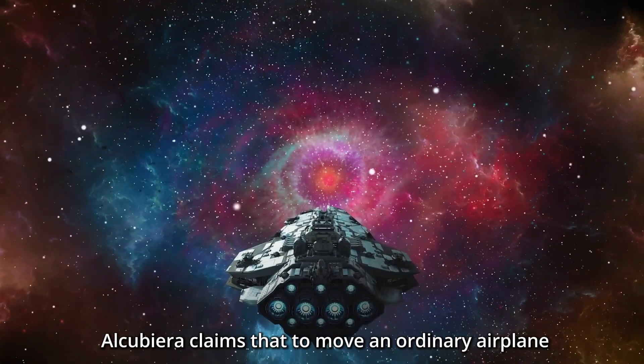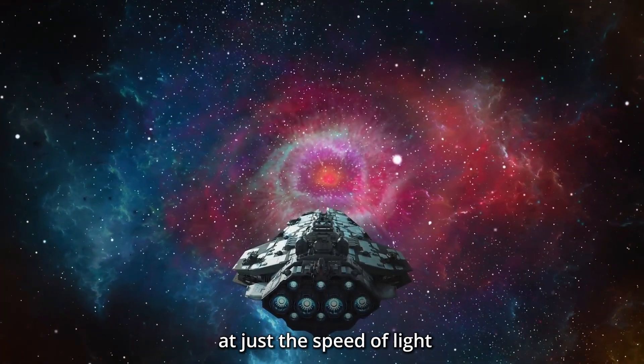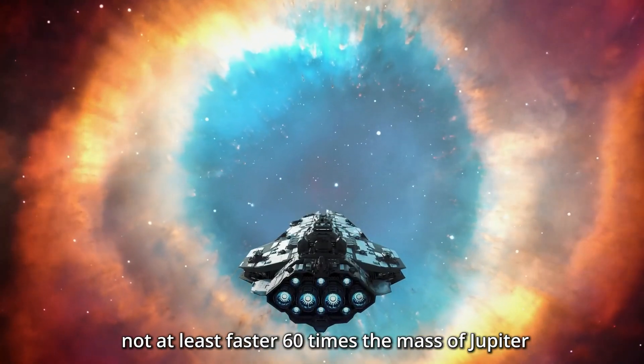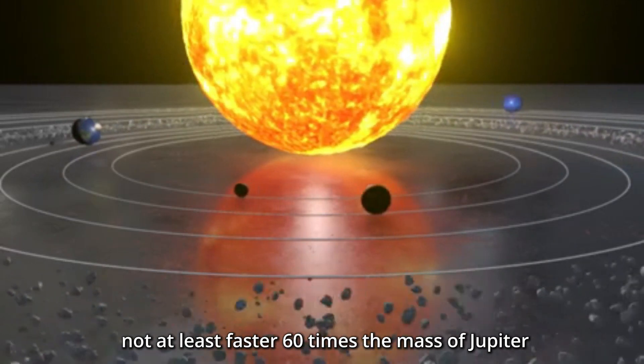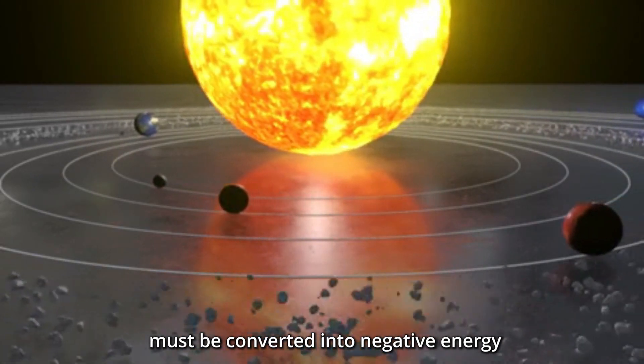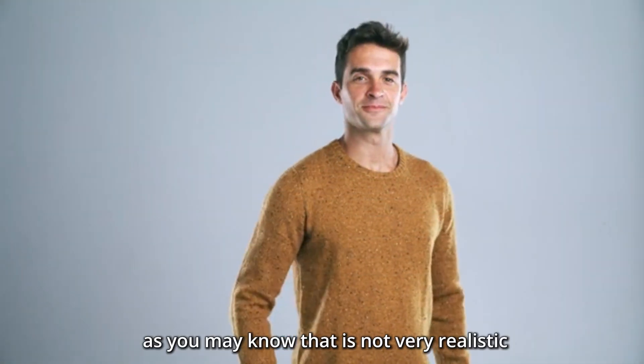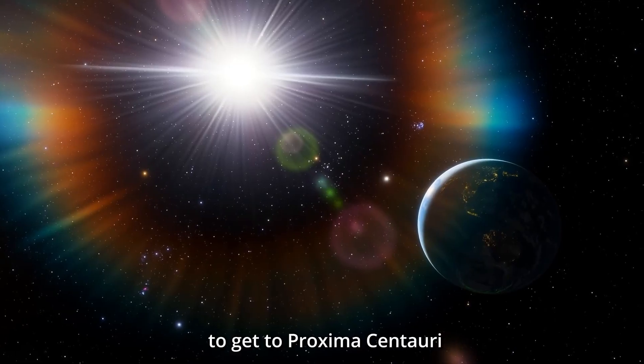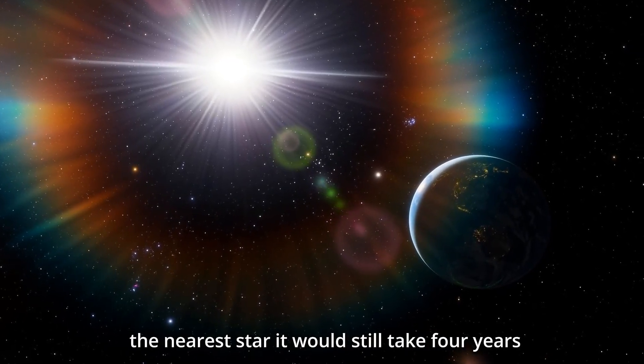Alcubierre claims that to move an ordinary airplane at just the speed of light, not at least faster, 60 times the mass of Jupiter must be converted into negative energy. As you may know, that is not very realistic. To get to Proxima Centauri, the nearest star, it would still take four years even with that.